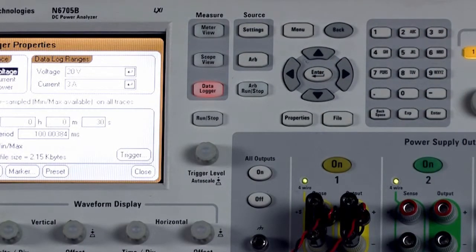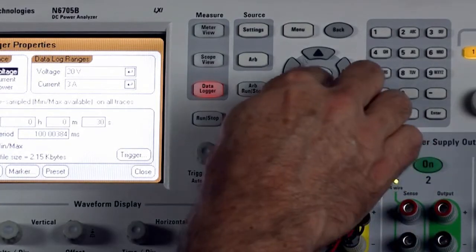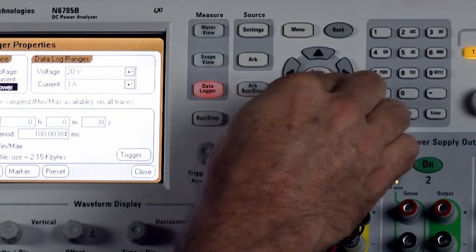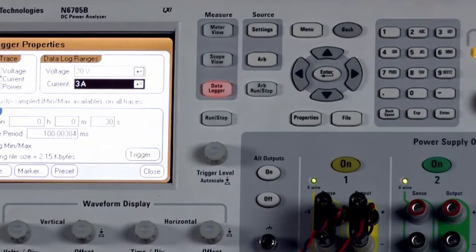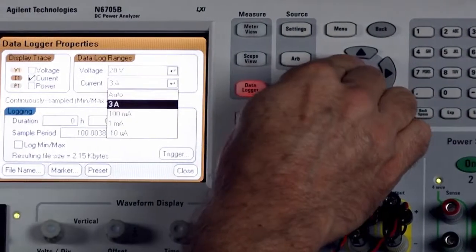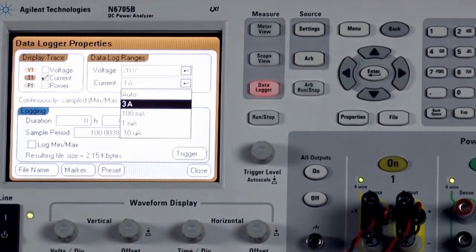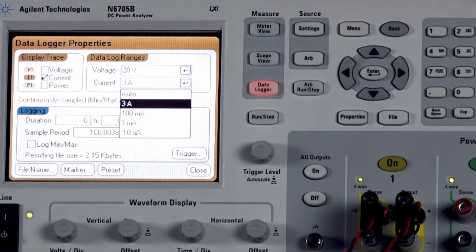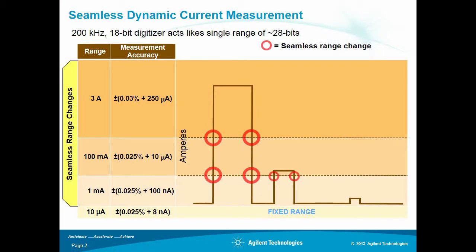The other key thing that we need to set is the current log range. As I push this, you can see we have four current ranges: 10 microamp, 1 milliamp, 10 milliamps, and 3 amps. If you can see on the slide, seamless auto ranging allows you to range between the 1 milliamp, 100 milliamp, and 3 amp ranges seamlessly.